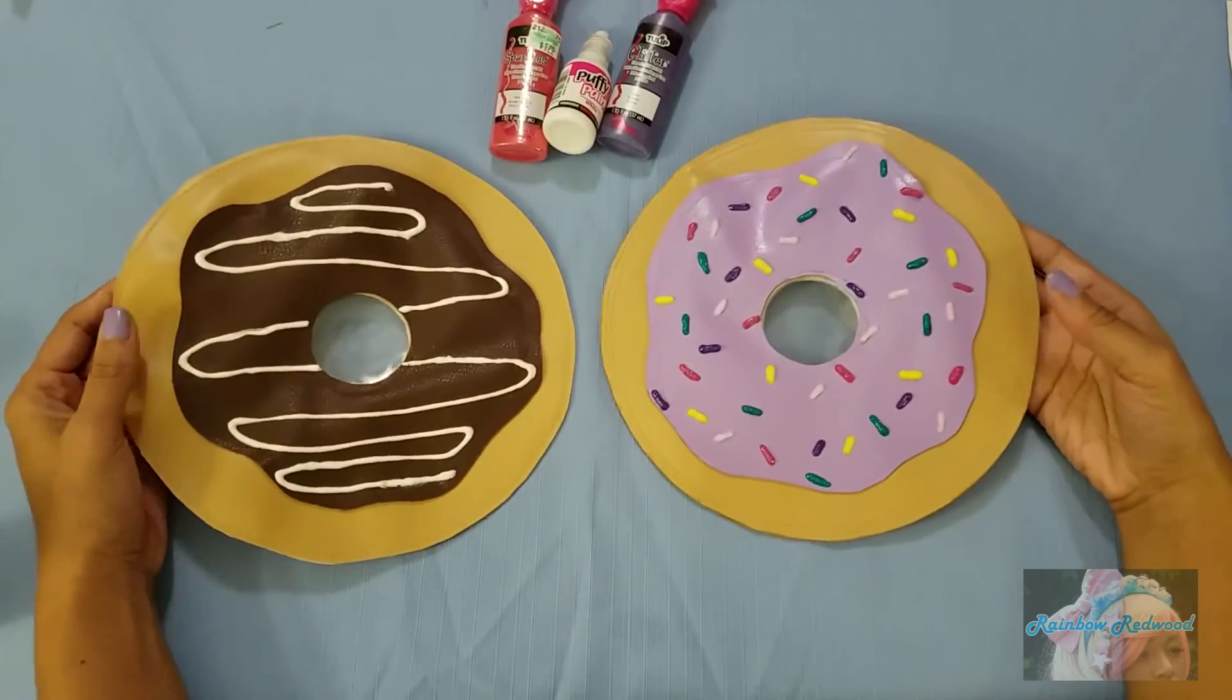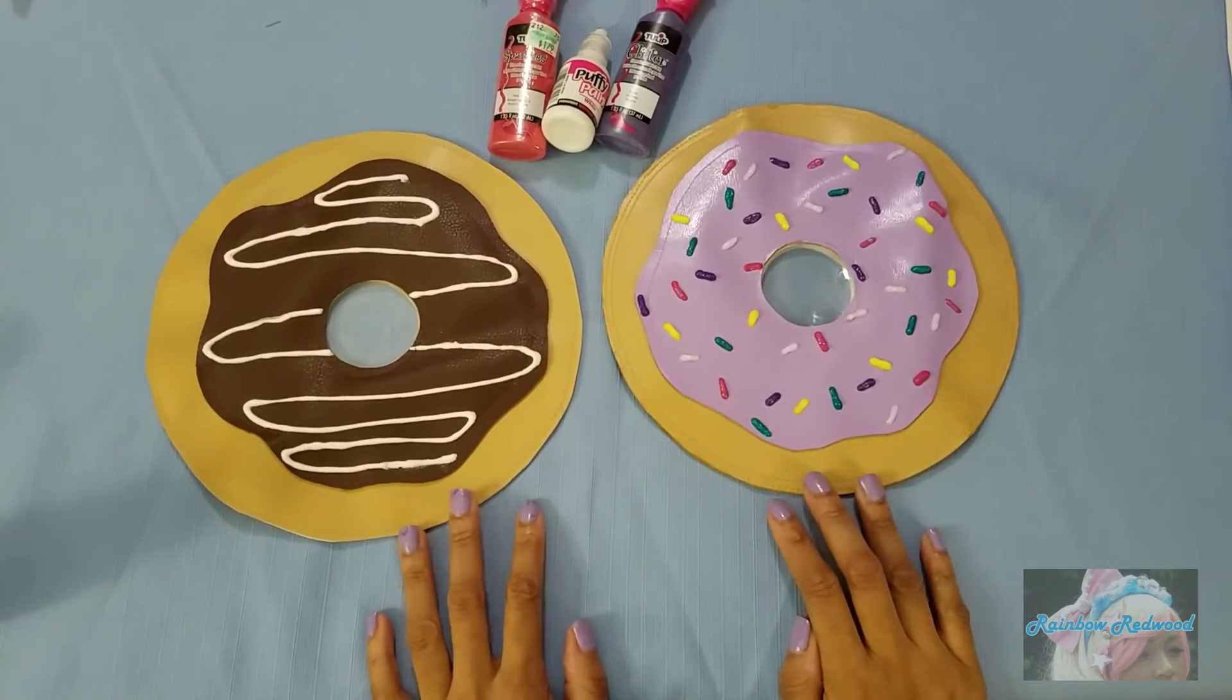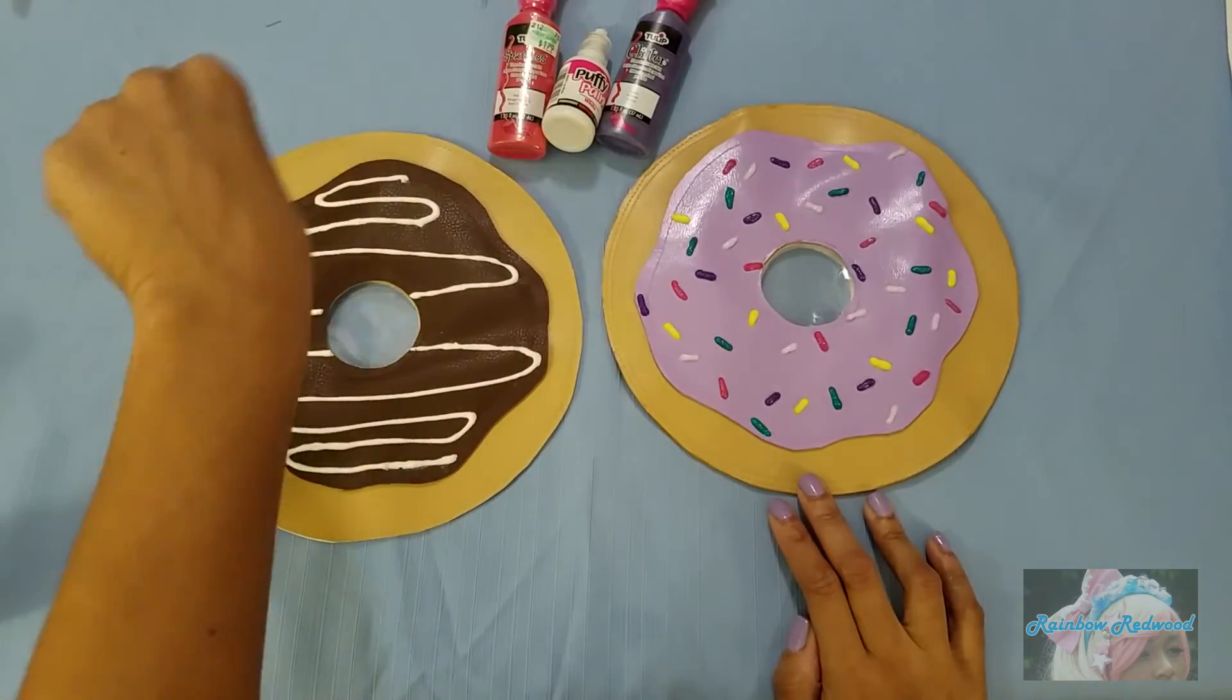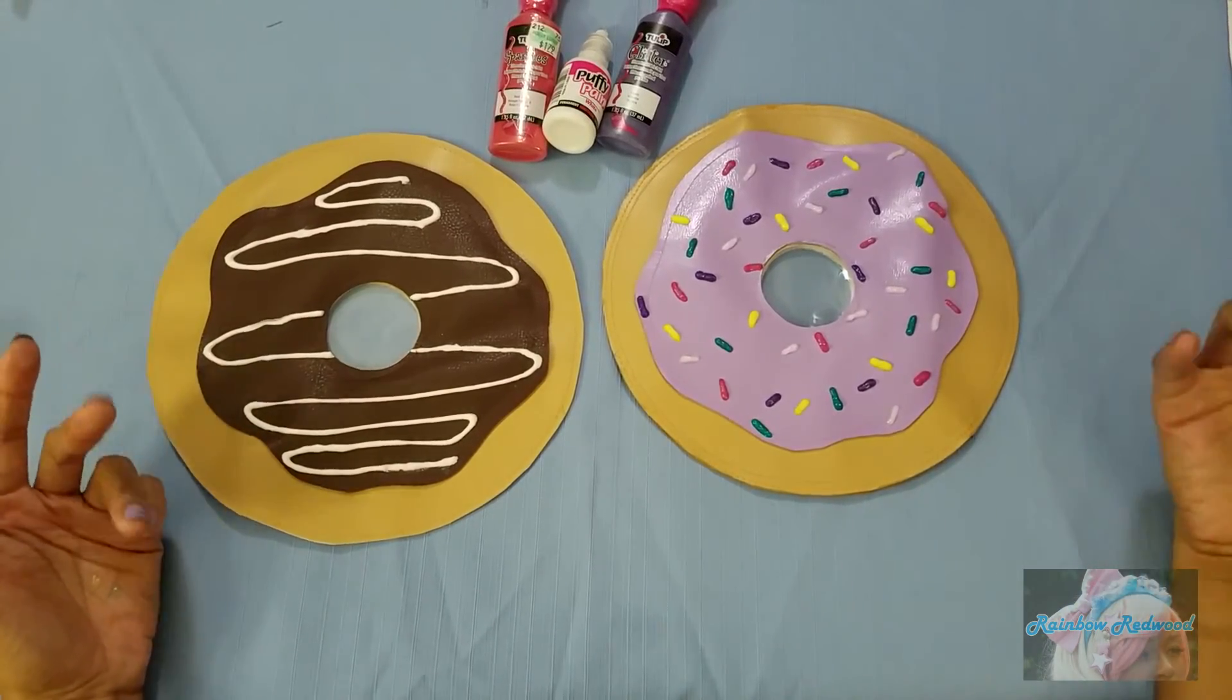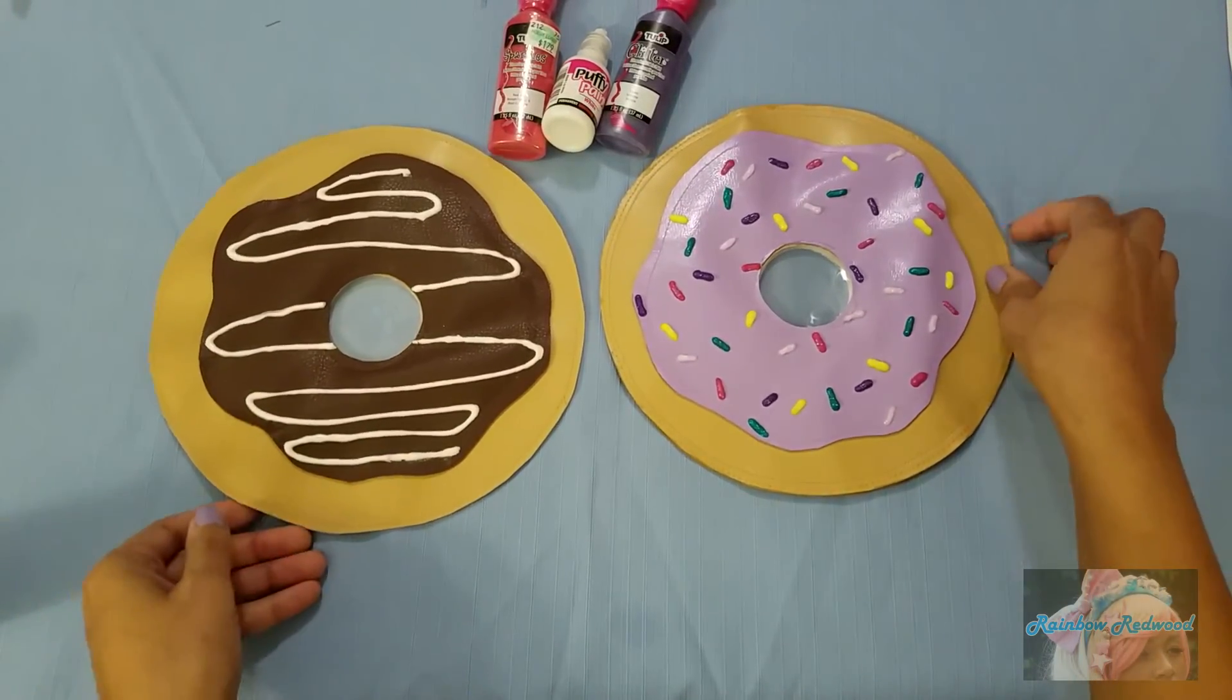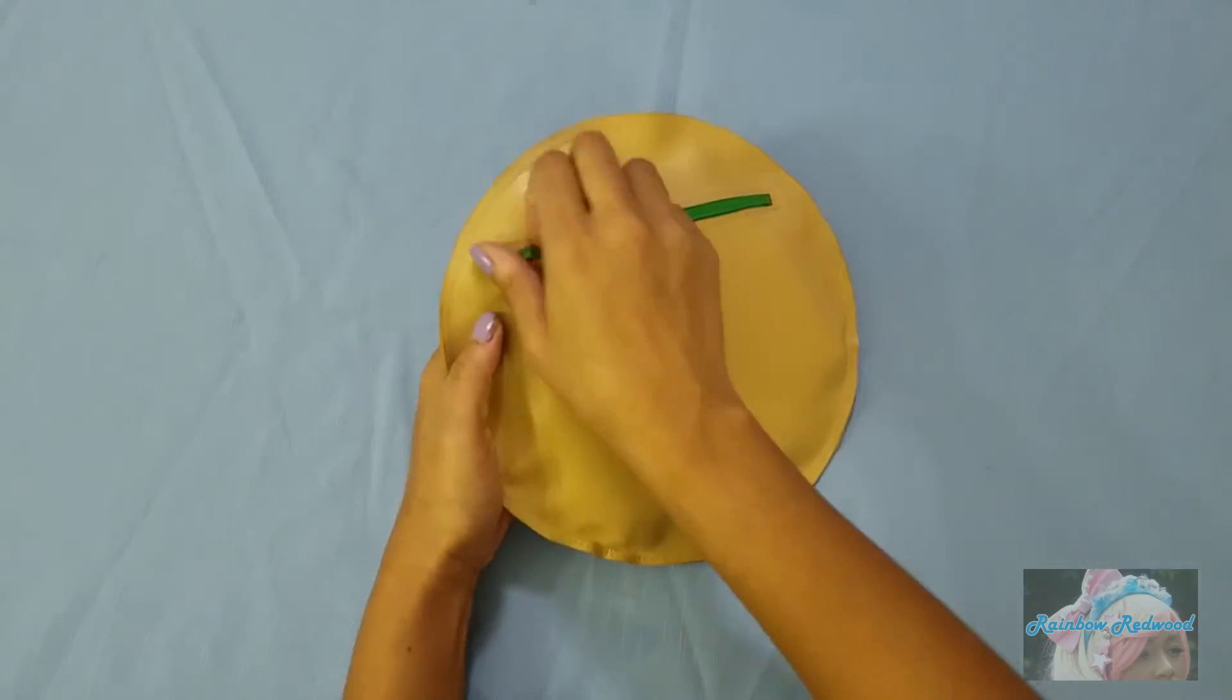Here are my finished doughnuts. I use three-dimensional paint to just kind of do this drizzle on this one and sprinkles on this one. You don't have to do that. I think it still looks like it down there with just plain frosting. Alright, until next time. Bye!